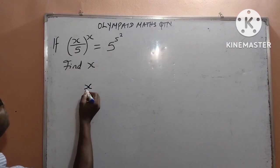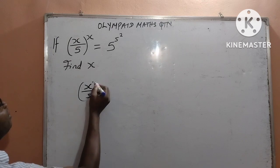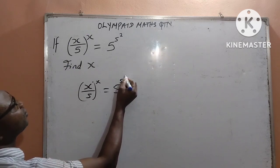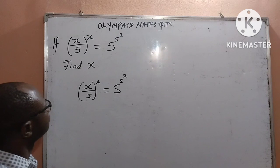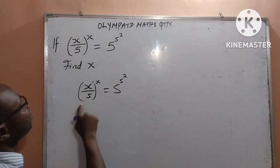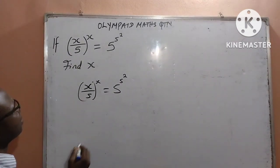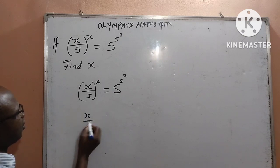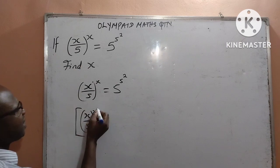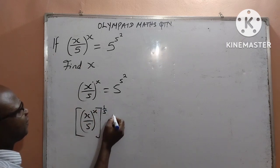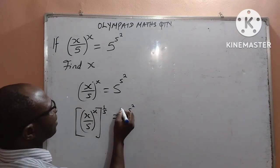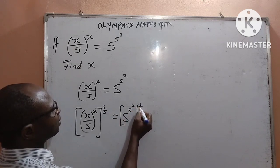I have x all over 5, all to the power of x, equal to the right-hand side: 5 to the power of 5 to the power of 2. What I will do — I will raise both sides to the power of 1 over 5. So I am going to have (x/5)^x raised to the power of 1 over 5, and the same on the right-hand side: 5 to the power of 5 to the power of 2, raised to the power of 1 over 5.